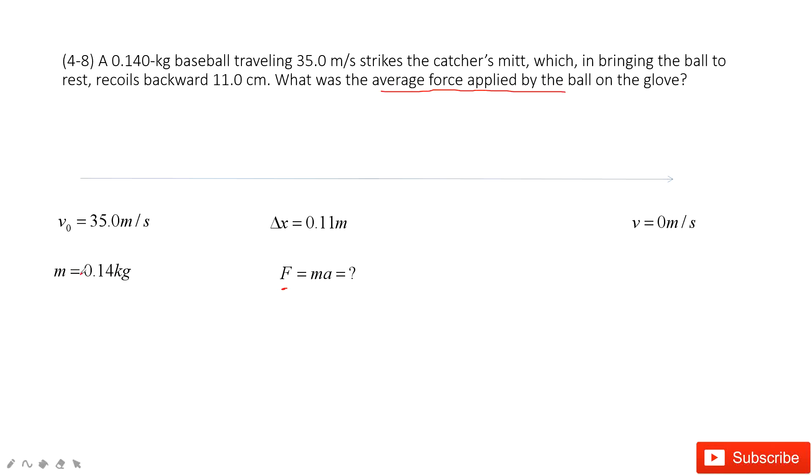You can see the mass of the baseball is given. The next step, we need to find the acceleration. Looking at the acceleration, we know initial velocity, final velocity, and displacement. So acceleration is very easy to find with our favorite equation.